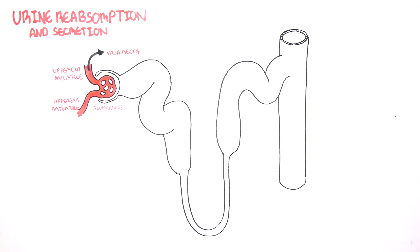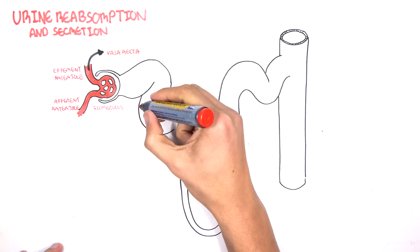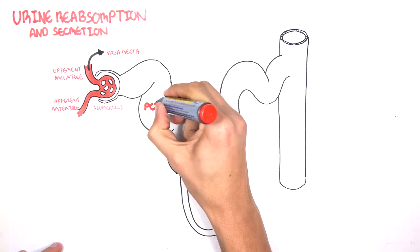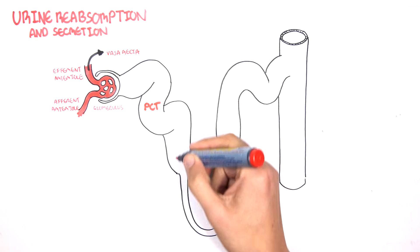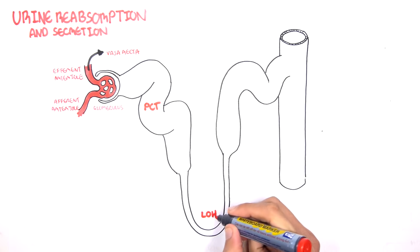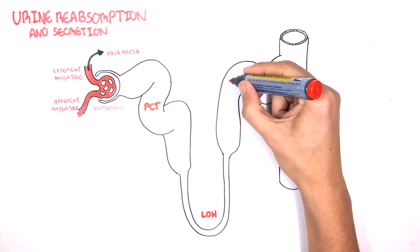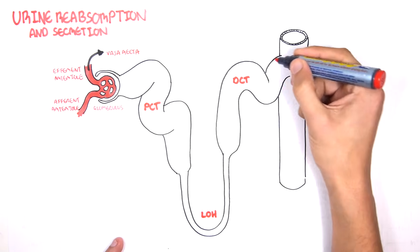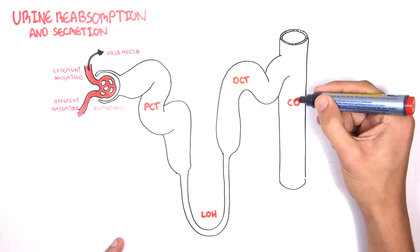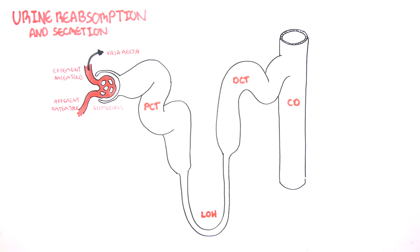The tubule of the nephron has a few sections. After the head of the nephron, called the Bowman's capsule, you have the proximal convoluted tubules, the loop of Henle, the distal convoluted tubules, and then the collecting duct. These different sections of the nephron are responsible for reabsorption of different electrolytes, substances, and water, though they may also absorb the same things in varying amounts.